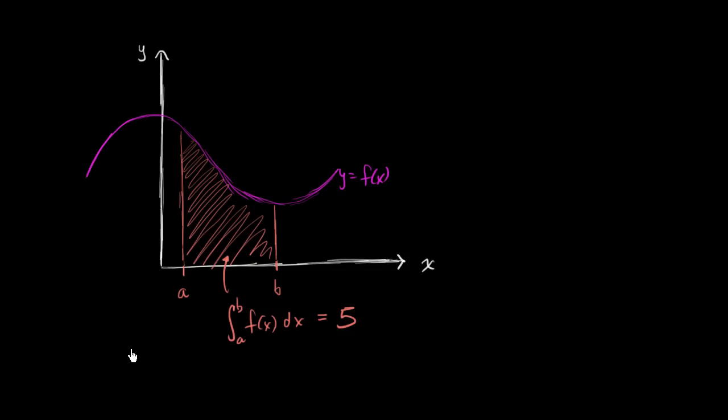So given that, can you figure out what the definite integral from a plus some constant c. Let me do this in a different color. So what is going to be the definite integral of f of x minus c dx from a plus c to b plus c? So this might look a little daunting, but I encourage you to try to visualize what's going to happen here. Try to pick a c in your brain and try to graph them and pause the video and try to think about what this is going to be given what we know about this.